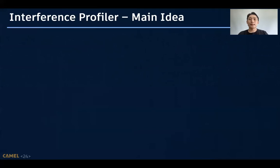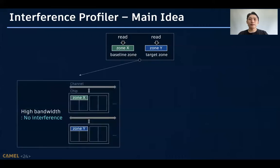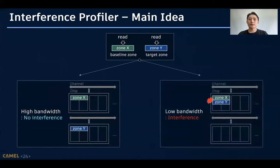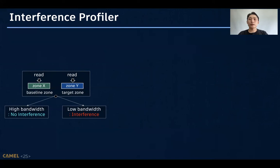The main idea is very simple. If we read the data from Zone X and Zone Y at the same time, we will get different bandwidths based on the relationship between the zones. If there is no interference between the zones, we will get a high bandwidth. Otherwise, if the zones interfere with each other as they exist on the same flash resource, we will get a low bandwidth. So, we can determine the relationship between zones by doing this simple decision process.